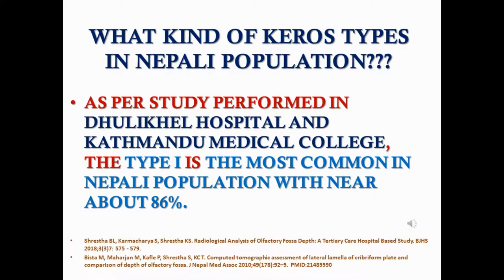What Keros type is most common in the Nepali population? As per different studies performed in Nepal, mainly at Tribhuvan University Teaching Hospital and Kathmandu Medical College, Type 1 is the most common olfactory fossa depth in the Nepali population, at approximately 86%.